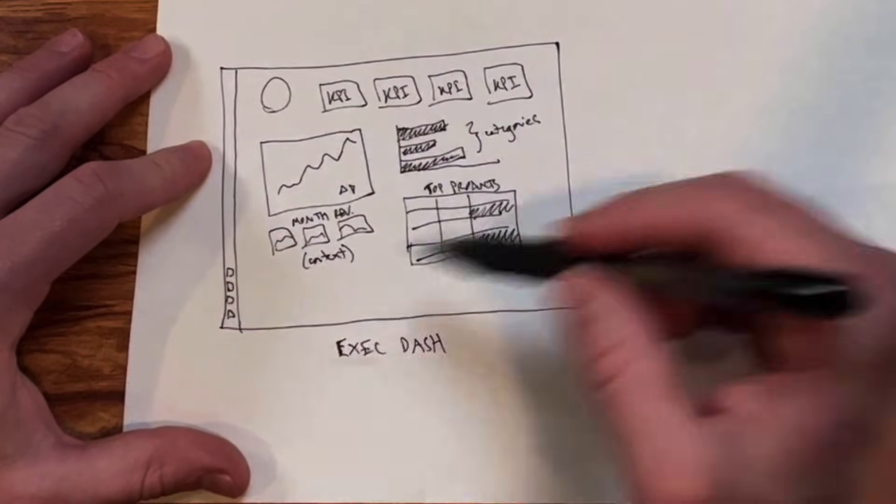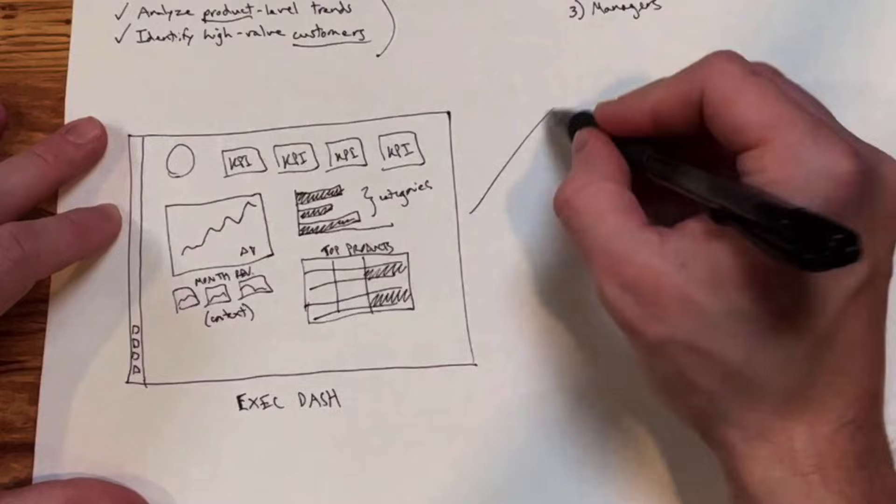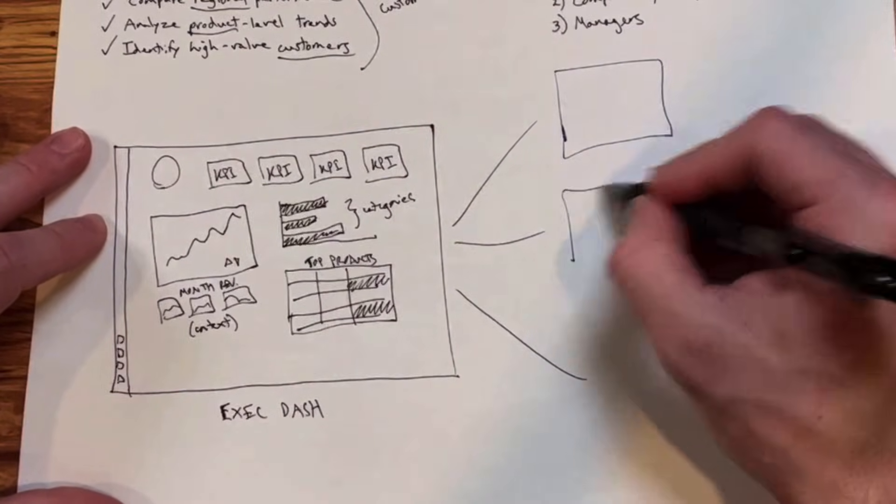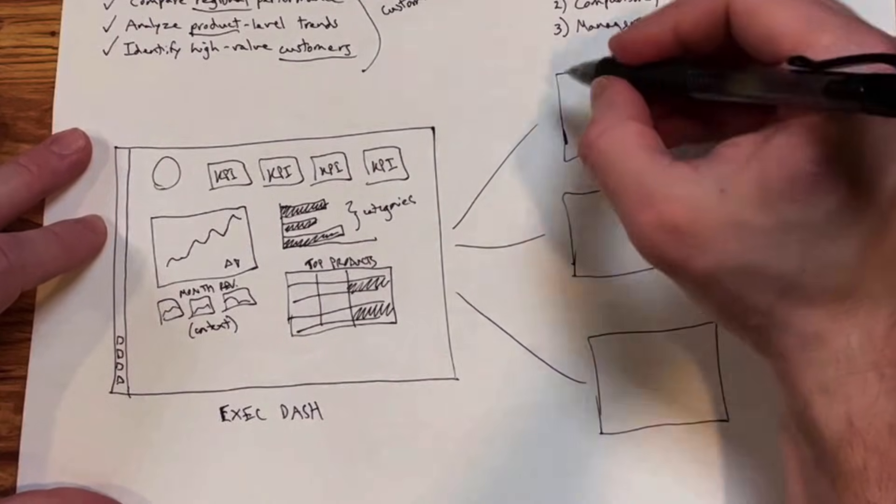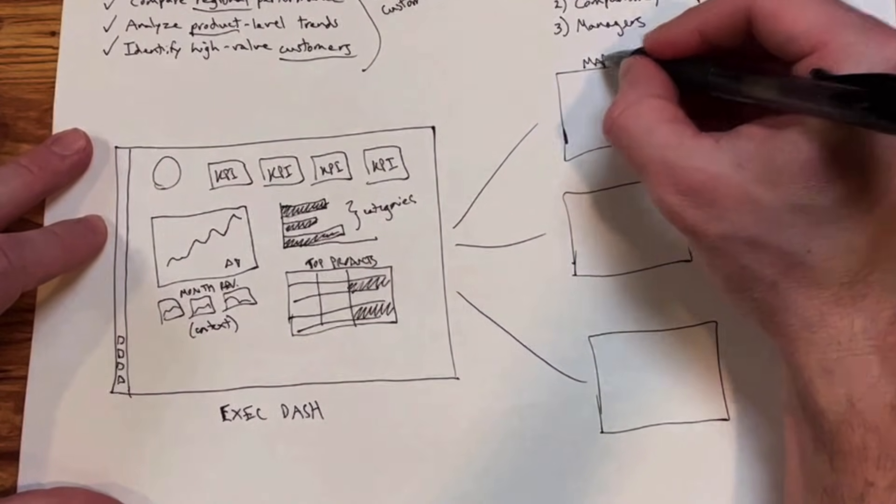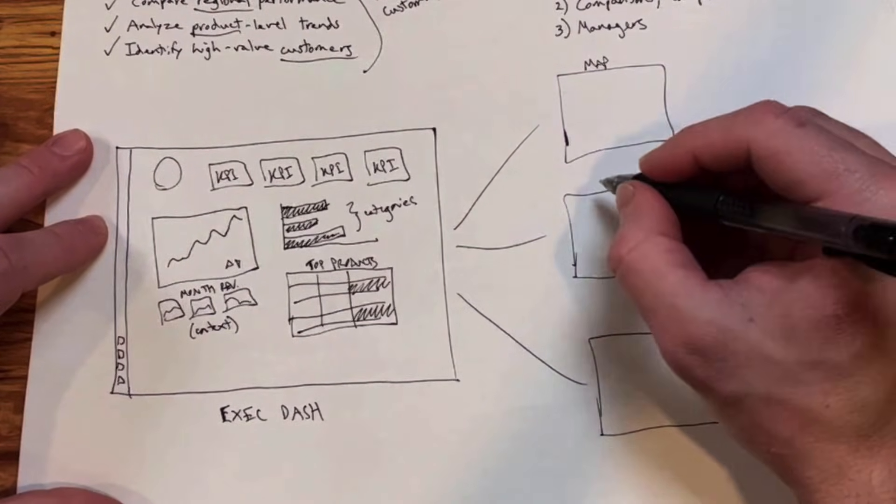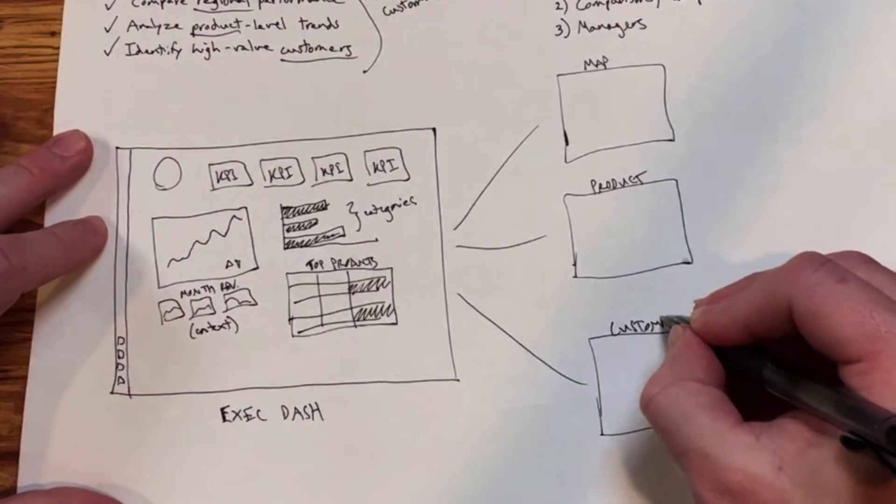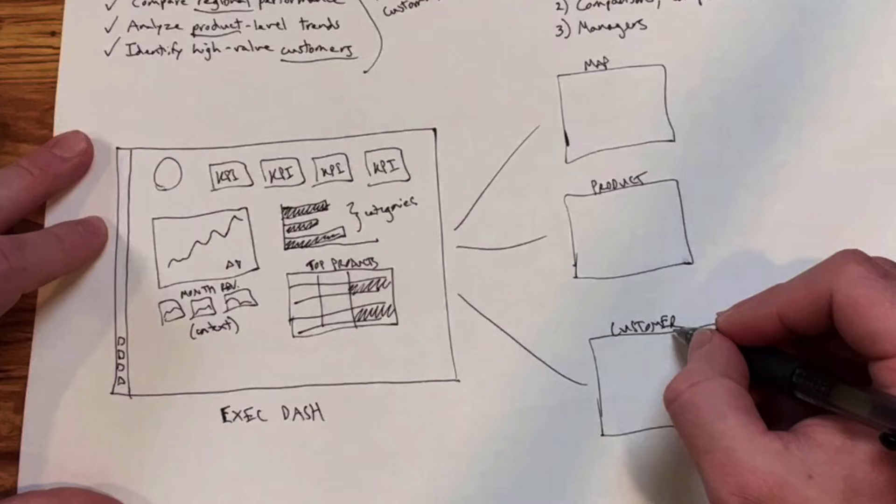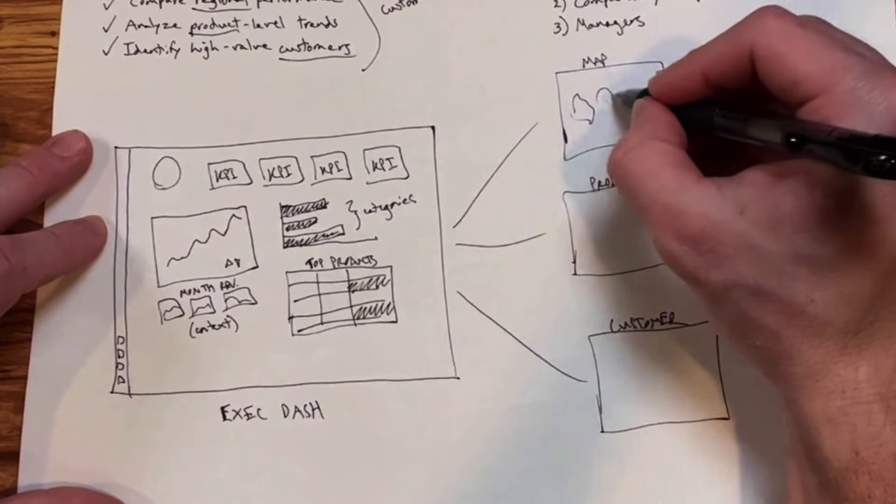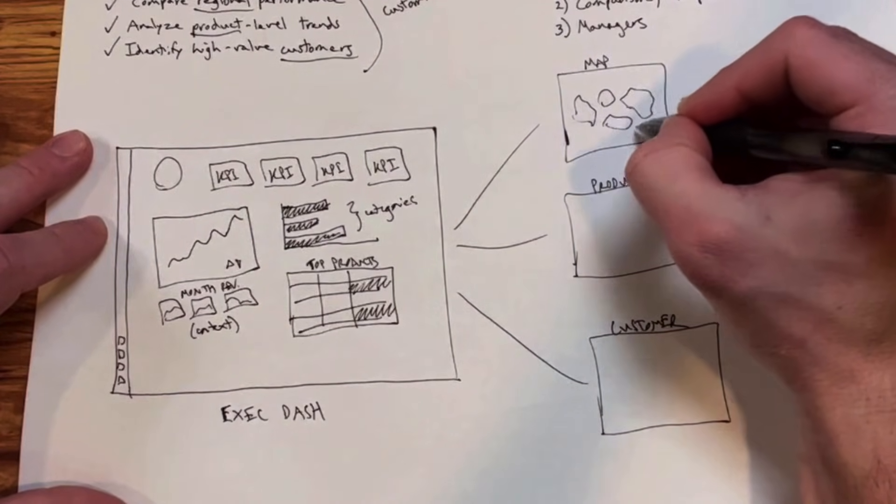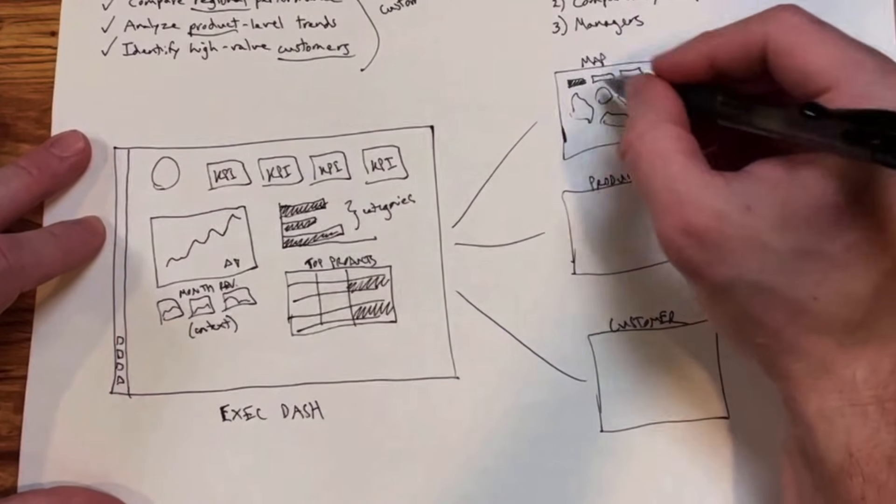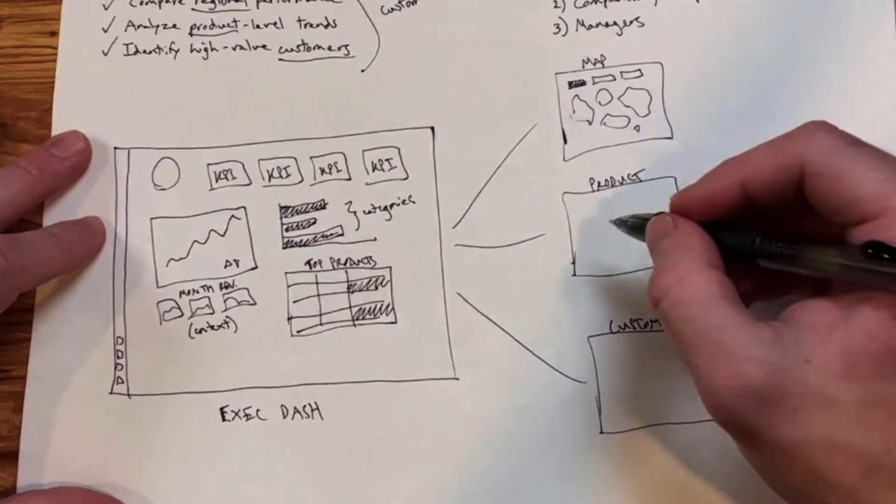Now real quick let's take a look at what those additional pages might look like. Again, nothing set in stone, this is quick and dirty at this point, but remember we've got a map visual for geospatial, we've got product detail, and we've got customer detail as well. For map, here's a sketch of the world's worst map—you get the picture. Maybe we've got a slicer up here to drill into a specific country or continent. I think that's all we need for that view.